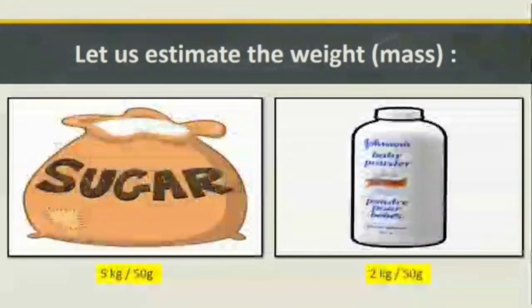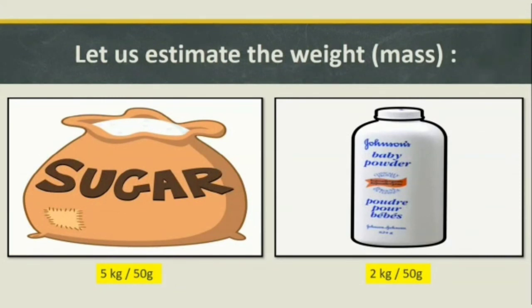Now let us try two more examples. Let us estimate the correct weight of a sugar bag — is it 5 kilograms or 50 grams? Yes, 5 kilograms is the correct answer. Now, see the talcum powder — which is correct, 2 kilograms or 50 grams? The right answer is 50 grams.